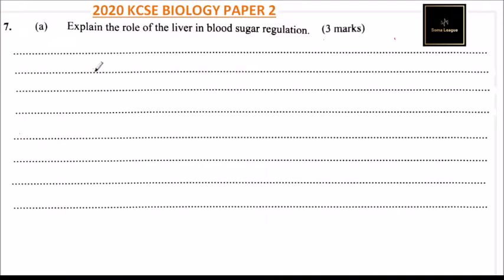Question number seven, part A: explain the role of the liver in blood sugar regulation. The liver is involved in sugar regulation because it secretes a hormone that converts excess glucose to glycogen and fats. When there is a low level of blood glucose, it secretes a hormone known as glucagon to convert glycogen back to glucose and fats.